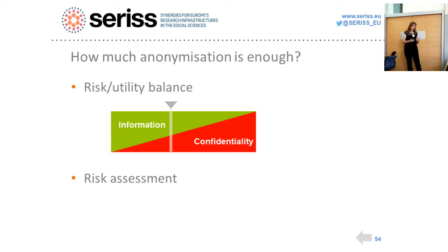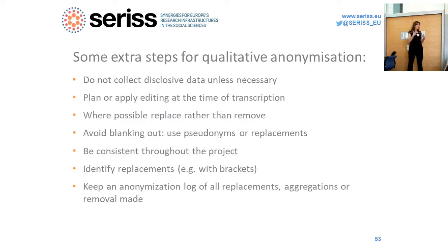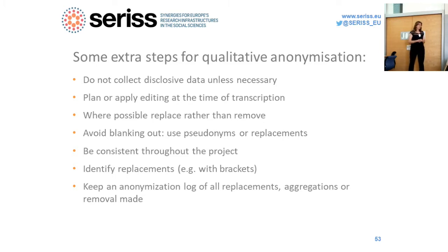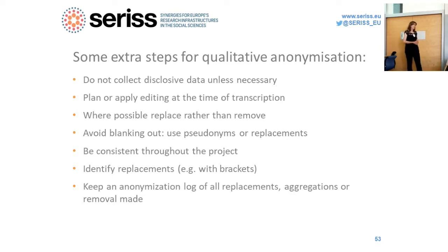Especially with qualitative research and transcribing: as you transcribe, it's already good to identify everything that will need to be anonymized later, because if you end up with lots and lots of pages you may miss something. Start to highlight and identify what will need to be anonymized. Where possible, replace rather than remove — the more you remove, the more you lose quality or information useful for the research. For example, for a person's name, use a pseudonym — replace the information rather than deleting it.